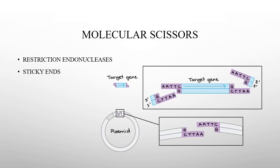Hamilton O. Smith isolated the first restriction enzymes in 1970. These enzymes cut DNA at very specific sites. The restriction enzyme cuts the DNA at a specific recognition sequence, for example at the sequence GAATTC.